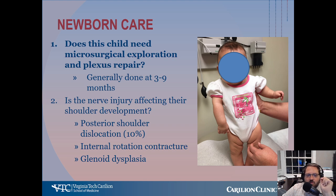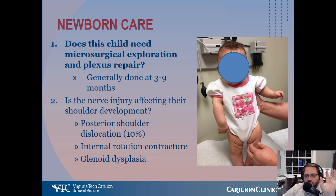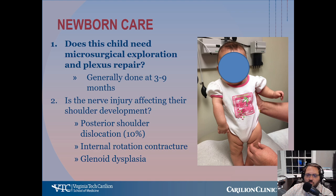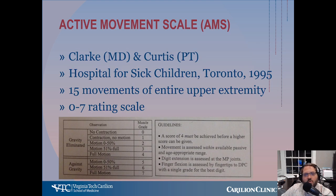After you get past that first year, the second question is: is this nerve injury affecting their shoulder development? The focus on the second year of life and beyond is the shoulder. About 10% of babies will have a posterior shoulder dislocation associated with their brachial plexus palsy, because the internal rotators are intact and push the shoulder out the back. Glenodysplasia will follow because of the internal rotation of the shoulder, and the posterior glenoid becomes rather retroverted and dysplastic, often needing treatment.